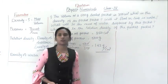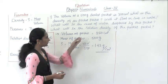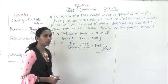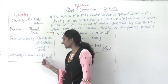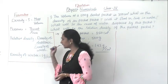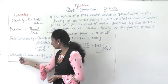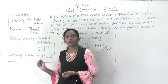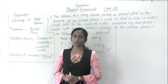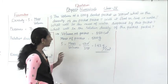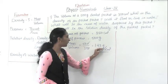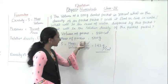Now the second part: will the packet float or sink in water? To find whether a substance will float or sink in water, you know that the density of water is 1 gram per centimeter cube. You have to compare the density of the substance to the density of water. If the density is greater than water, it will sink. If it is less than 1, it will float on water. The density we already found is 1.43.